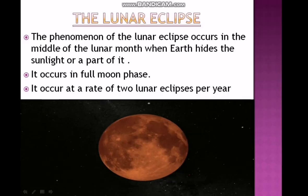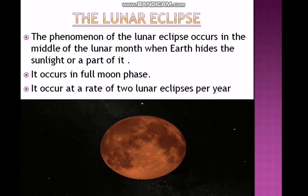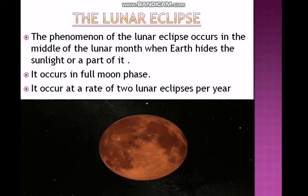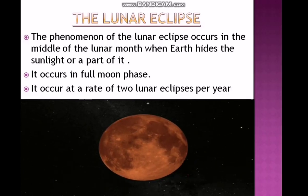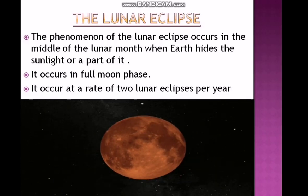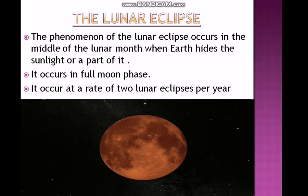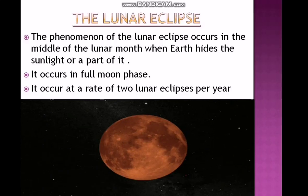Lunar Eclipse phenomena occur in the middle of lunar months, when the Earth hides the sunlight or part of it. It occurs during a full Moon phase, meaning the Moon appears completely, but then disappears completely during the eclipse. It occurs at a rate of 2 lunar eclipses per year.